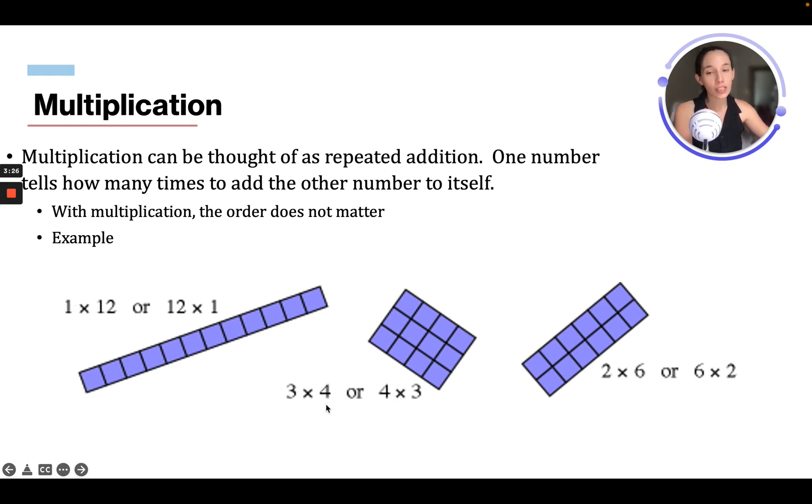Now, for example, we have 3 times 4, or 4 times 3, because the order doesn't matter. You can come over and you can see 1, 2, 3, and we're multiplying that by 1, 2, 3, 4, and that's gonna give us 1, 2, 3, 4, 5, 6, 7, 8, 9, 10, 11, 12.